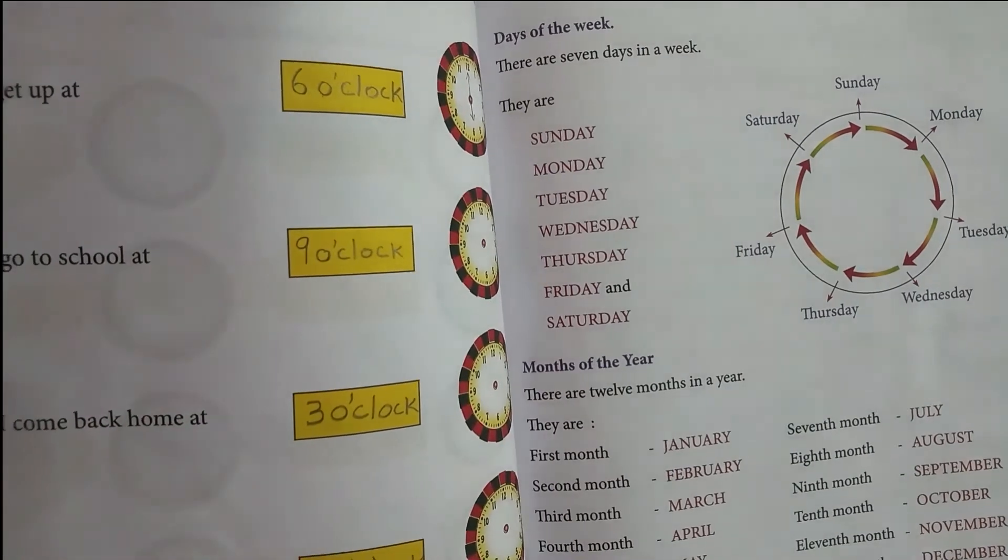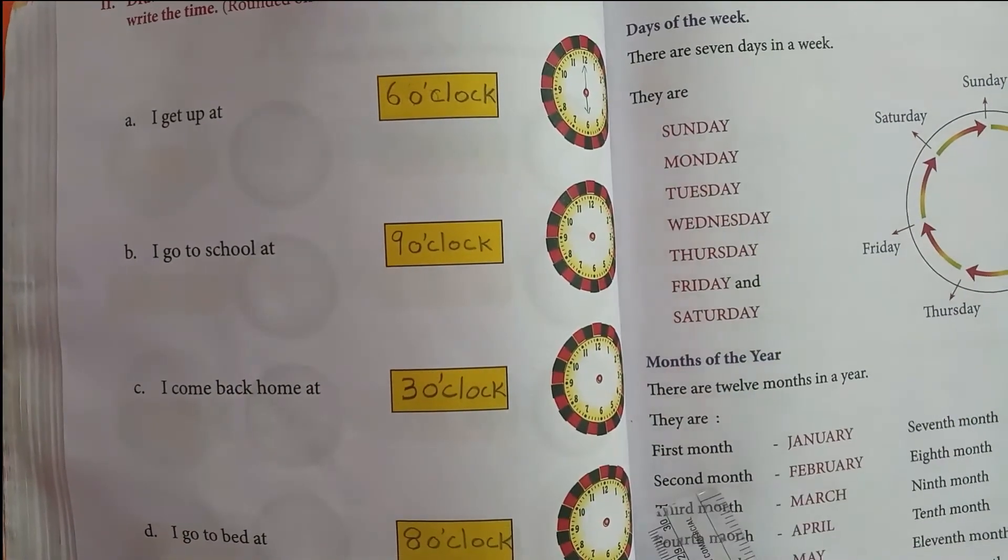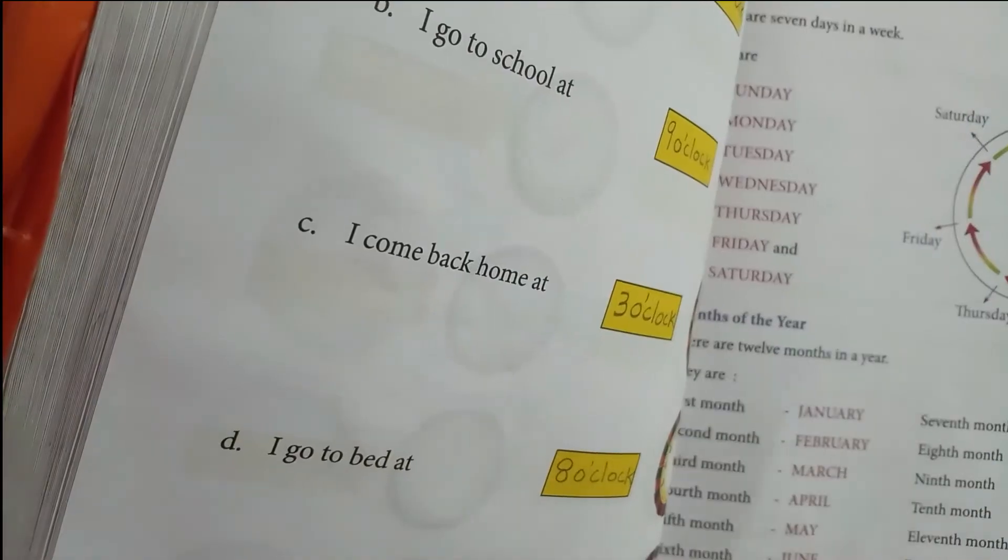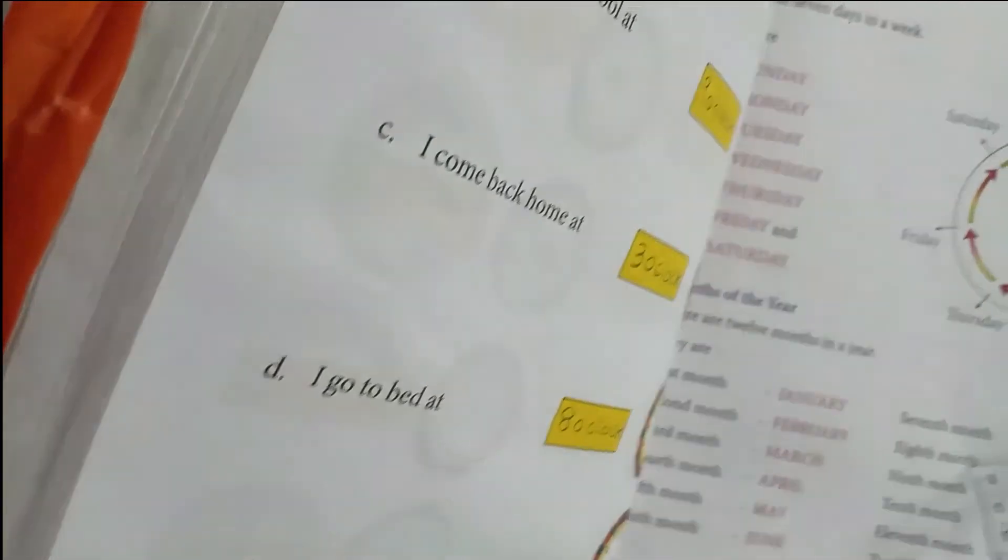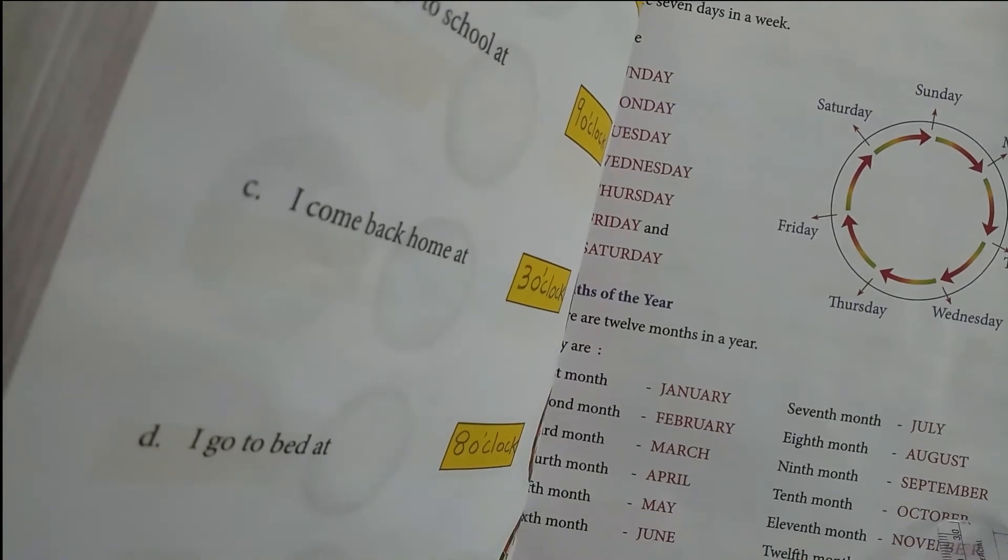See, there are: 1st month January, 2nd month February, 3rd month March, 4th month April, 5th month May, 6th month June, 7th month July, 8th month August, 9th month September, 10th month October, 11th month November, and 12th month December. These 12 months make 1 year. There are 365 days in a year.